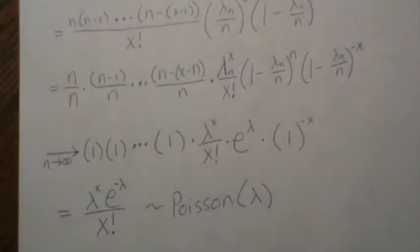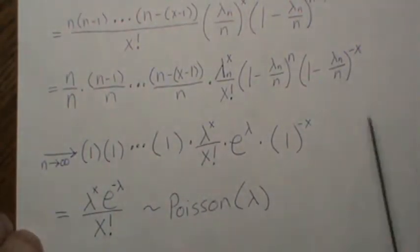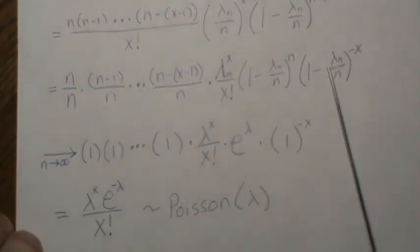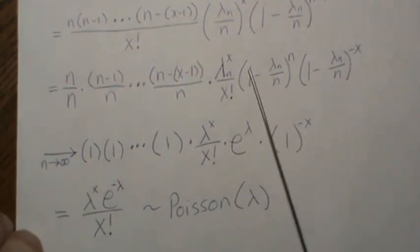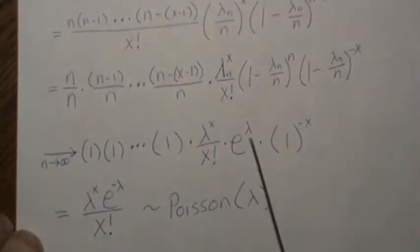Okay, so now let's use this in an example. And one note here, this is raised to the n, and this is a constant. So this goes to 0. But the way this converges, it converges to e to the lambda, where this converges to 1.